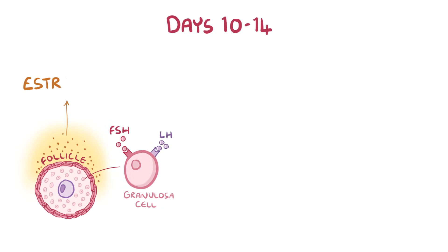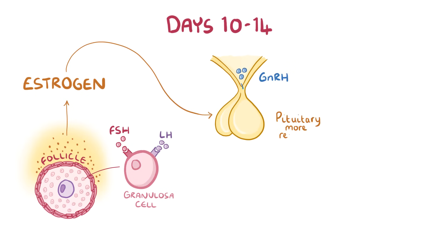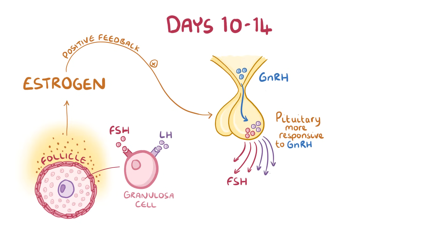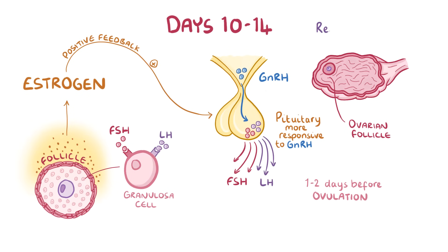The dominant follicle continues to secrete estrogen, and rising estrogen levels make the pituitary more responsive to the pulsatile action of GnRH from the hypothalamus. As blood estrogen levels climb steadily higher, estrogen from the dominant follicle becomes a positive feedback signal — it makes the pituitary secrete a large amount of FSH and LH in response to GnRH. This surge of FSH and LH usually happens a day or two before ovulation and is responsible for stimulating the rupture of the ovarian follicle and release of the oocyte, inducing ovulation.